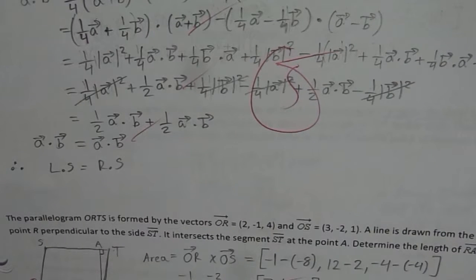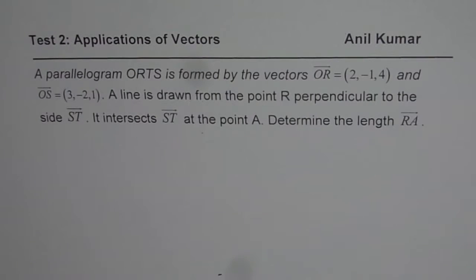Let's have a good look at this solution. So the question here is, a parallelogram ORTS is formed by the vectors OR equals to (2, -1, 4) and OS (3, -2, 1). A line is drawn from the point R perpendicular to the side ST. It intersects ST at a point A, determine the length RA. So that is a question for you.